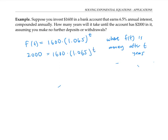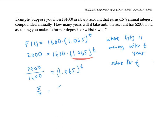Let me write out my equation and make a note that I'm solving for t. To solve for t, I want to first isolate the tricky part — the part with the exponential in it. So I'm going to divide both sides by 1,600. That gives me 2,000 over 1,600 equals 1.065 to the t. I can simplify this a little further as 5/4. Now that I've isolated the tricky part, my next step is to take the log of both sides, because I have a variable in the exponent, and I know that if I take the log of both sides, I can use log rules to bring that exponent down where I can solve for it.